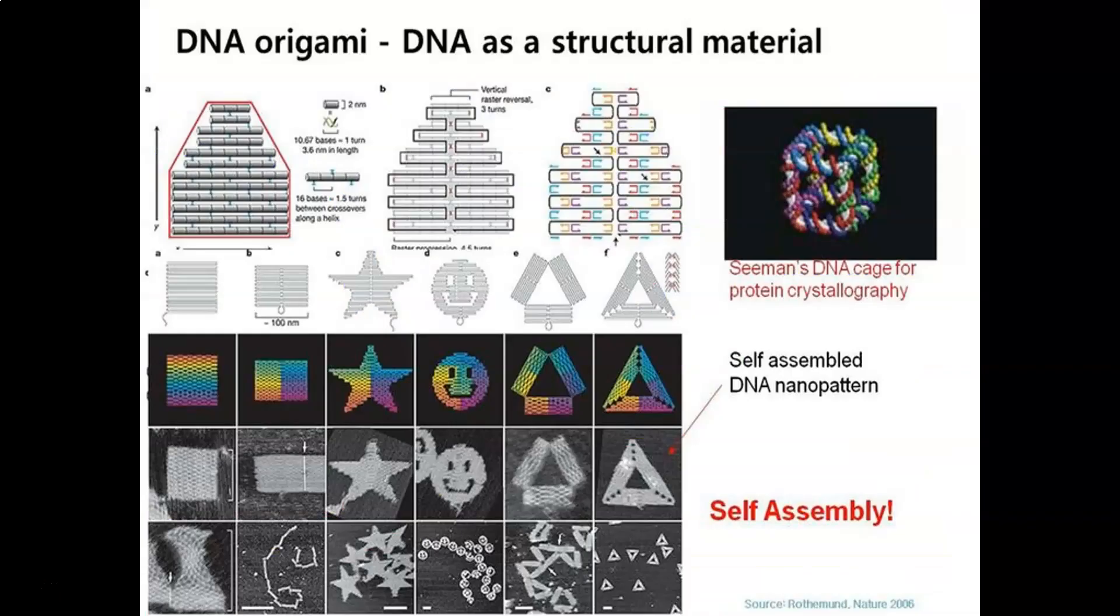So this is an example of DNA origami, wherein DNA is being used as a structural material. And it can be self-assembled to form different types of DNA nanopatterns. We will not go into the details of this, but this is just to give you an idea how DNA molecules can self-assemble themselves to form a few shapes.